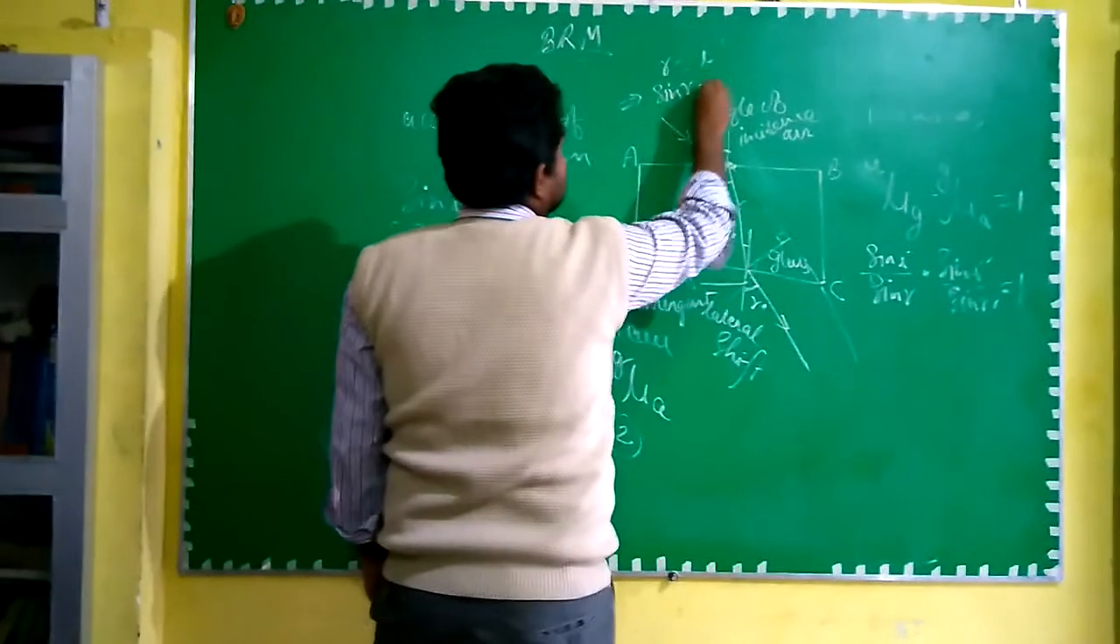From this relation we can cancel out sine R and sine I dash and it will be sine I upon sine R dash is equal to 1. By cross multiplying we will get sine I is equal to sine R dash.